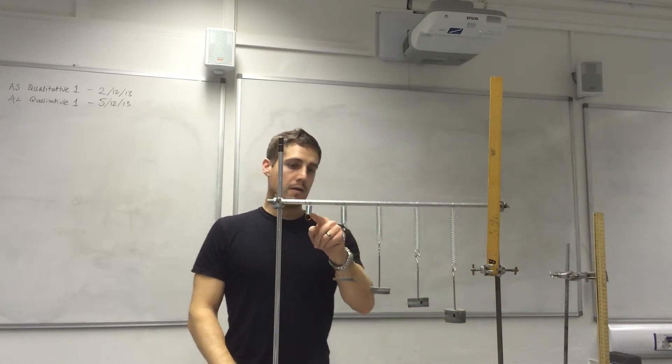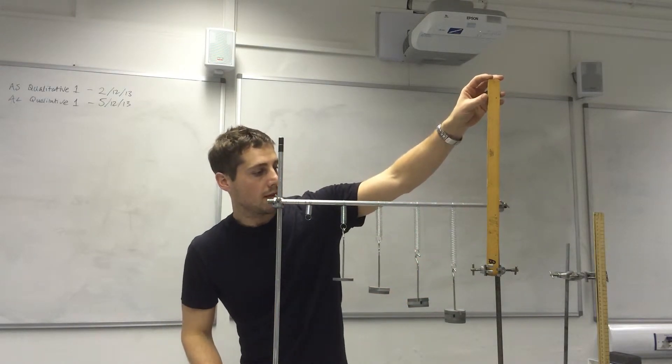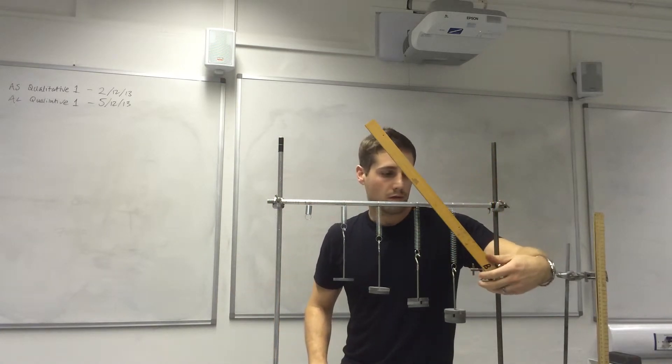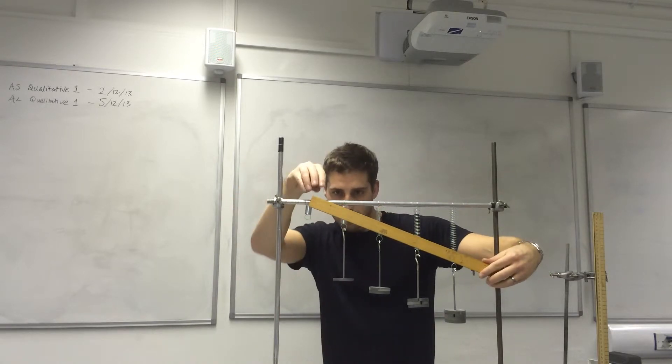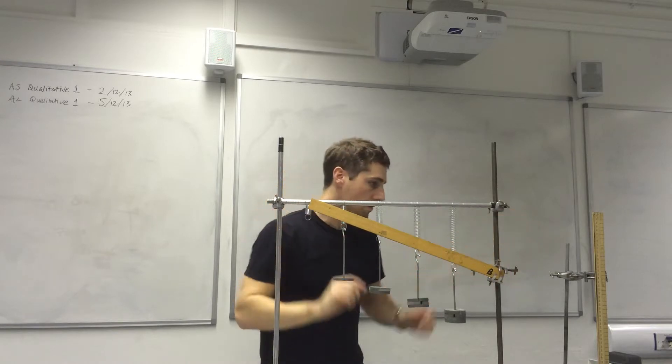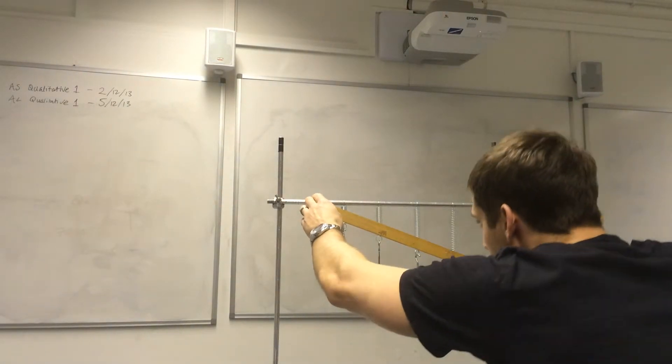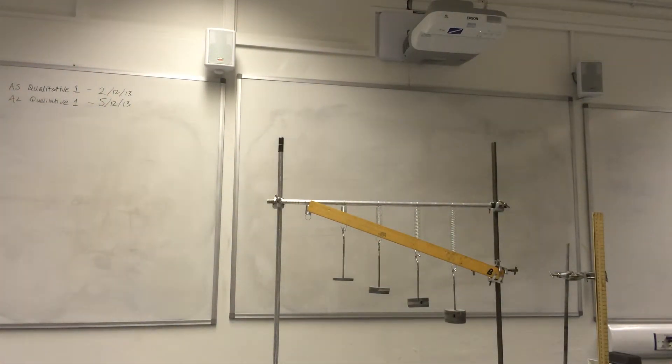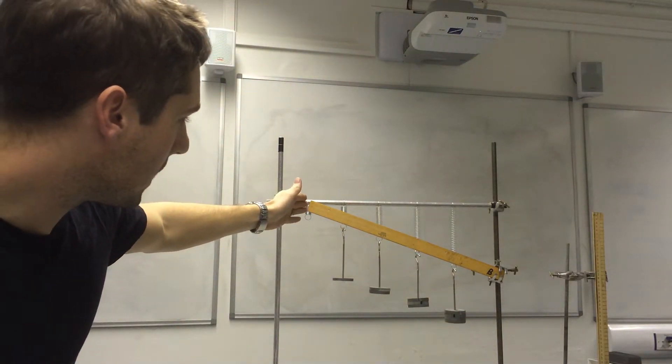You should be able to see a roughly linear trend there but hopefully to make that clearer if I turn this ruler so it's following those tops of the springs roughly. So that ruler is roughly following the tops of the mass hangers there. And you can see they're all lining up pretty well.